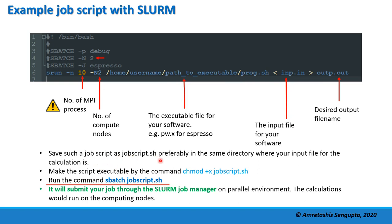Save the job script as a .sh shell script file, preferably in the same directory where you have your input files and where you want your calculation results. Make it executable using the command chmod +x jobscript.sh — note the spaces between chmod, +x, and the filename. Then run sbatch jobscript.sh to submit your job through the SLURM job manager. The calculations will run on the computing nodes in the parallel environment — you don't have to worry about anything else.